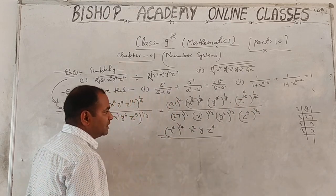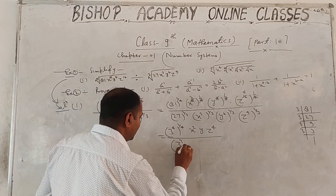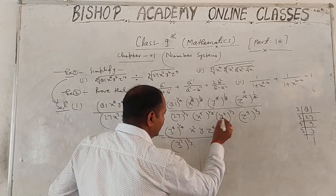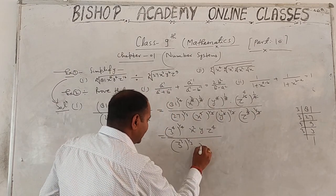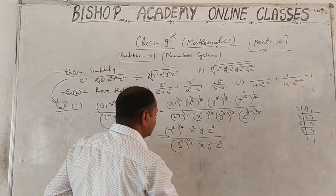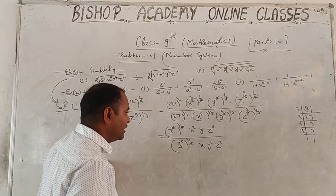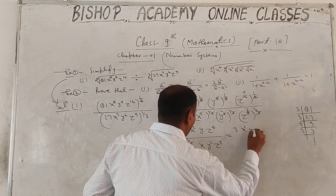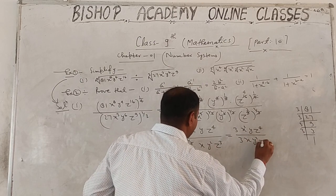So the numerator becomes 3 · x² · y · z⁴ and the denominator becomes 3 · x · y² · z³. The 3 cancels with 3. We are left with x² · y · z⁴ upon x · y² · z³. This simplifies to: 3x²yz⁴ upon 3xy²z³.